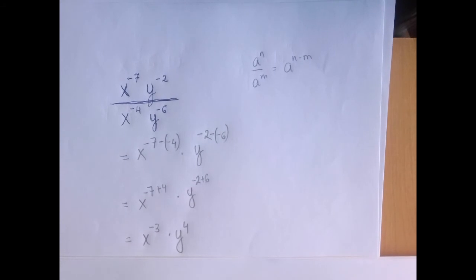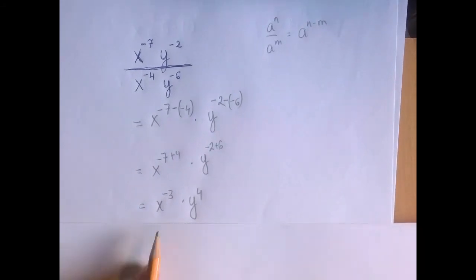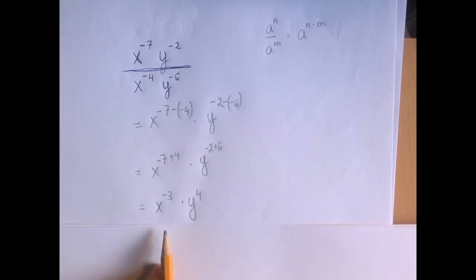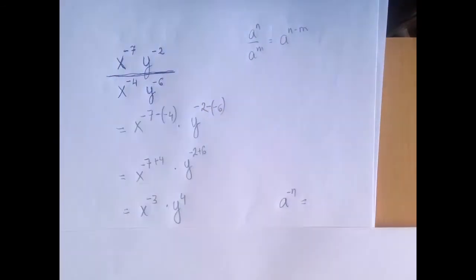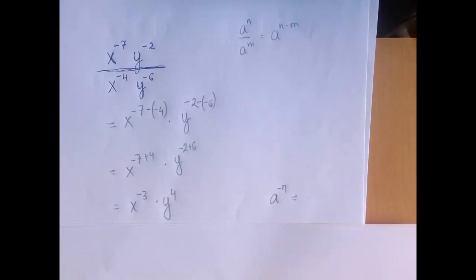So this expression is simplified. But the instructions say that we should present our answer without negative exponents. And what that means is we have to deal with x to the negative 3. So a to the negative n is the same as 1 over a to the n.